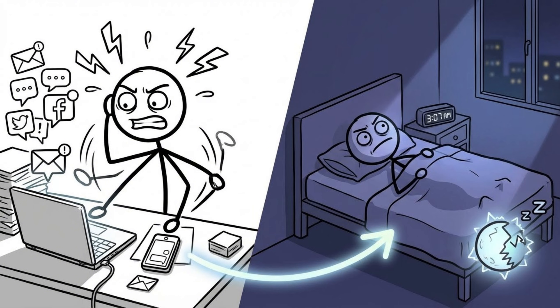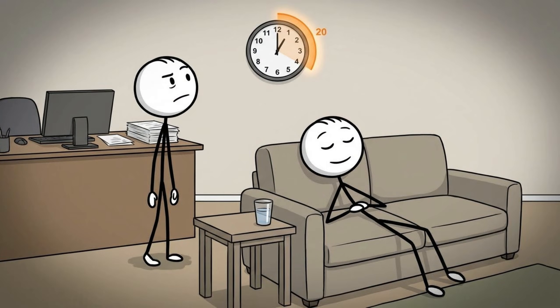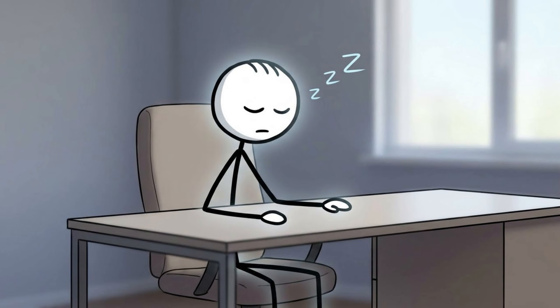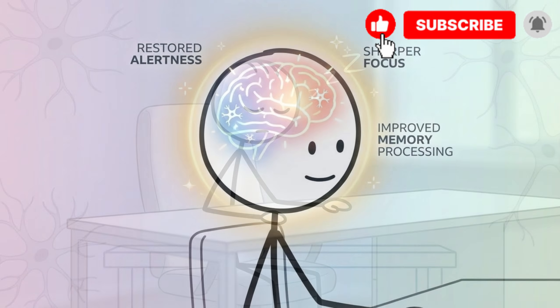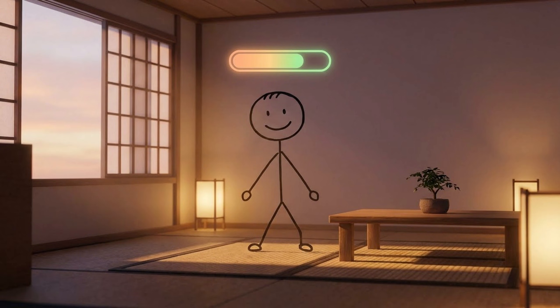When fat loss slows down, the instinctive response is to do something drastic - cut calories harder, add more cardio, push through fatigue. That reaction is understandable, but it's usually the wrong move. Progress slows not because your plan stopped working, but because your body has adapted to it. At that point, adjustments should be small and deliberate - a modest increase in low-intensity cardio, an extra 10-15 minutes added to a session, or if recovery allows, a second weekly HIIT workout added cautiously. The goal is to restore momentum without increasing overall stress beyond what you can recover from.